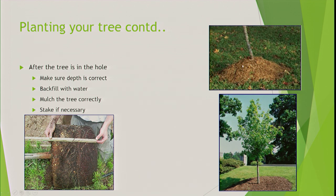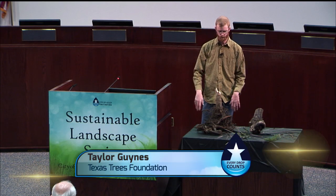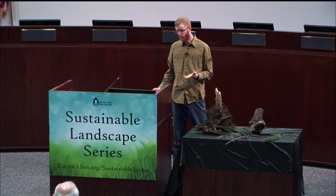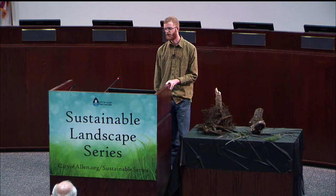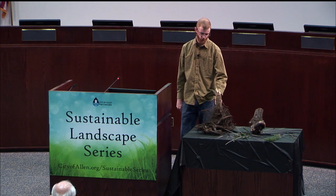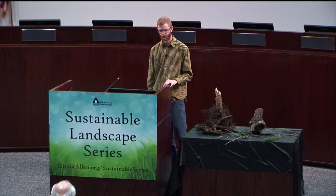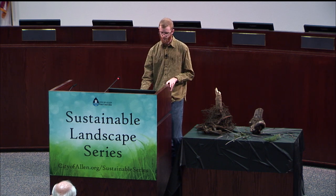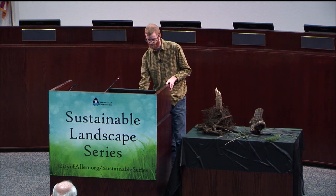Mulch the tree correctly — not like the volcano mulch shown here. What we do is make a berm or bowl around the tree with the extra soil, then place mulch surrounding that berm. I like making a bowl for newly planted trees because for the first growing season you want the water right where the growing roots are. A newly planted tree's new roots are closer to the trunk. After about two years, water outside the immediate root zone, because fibrous roots will be further out from the trunk.